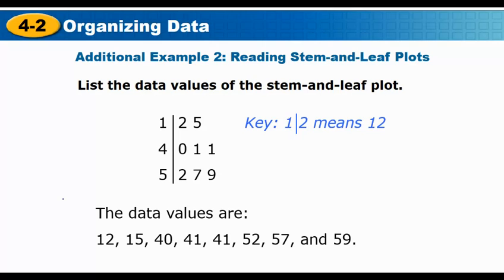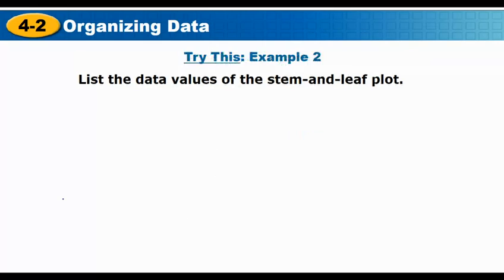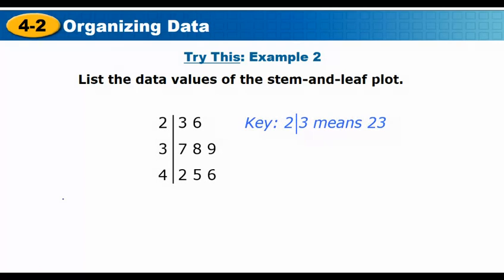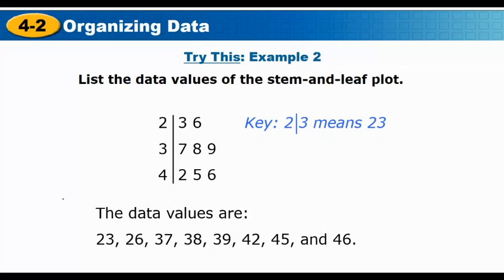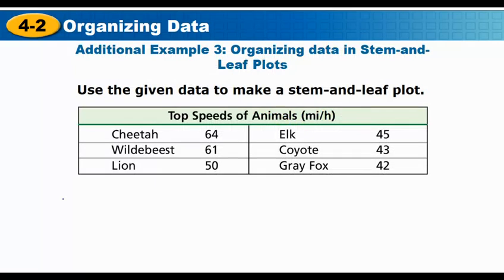Here's another stem-and-leaf plot where you're asked to list the data. Reading it the same way: for the stem 2, we get 23 and 26; for stem 3, we get 37, 38, and 39; and for stem 4, we get 42, 45, and 46.